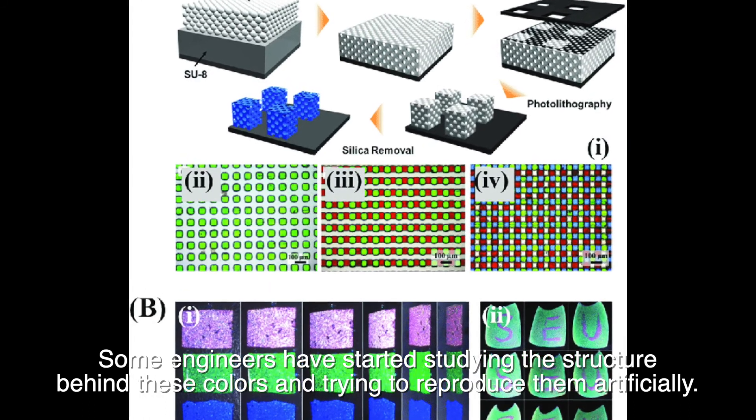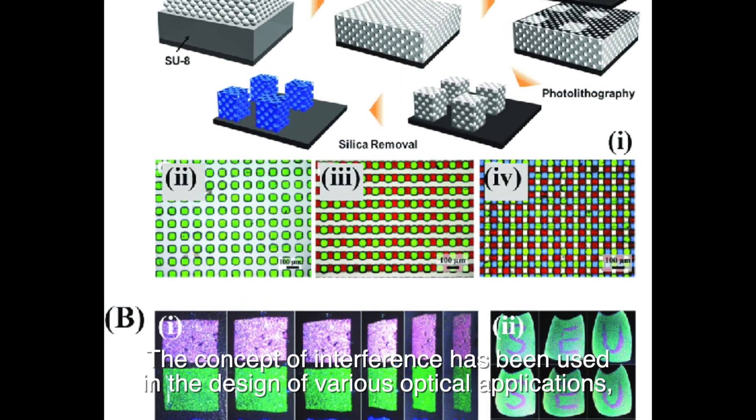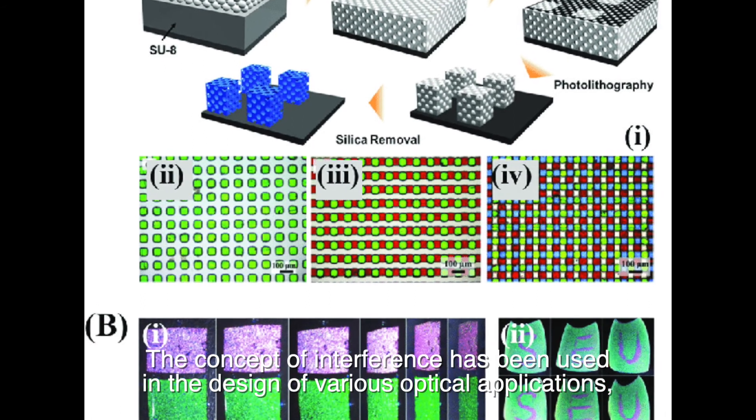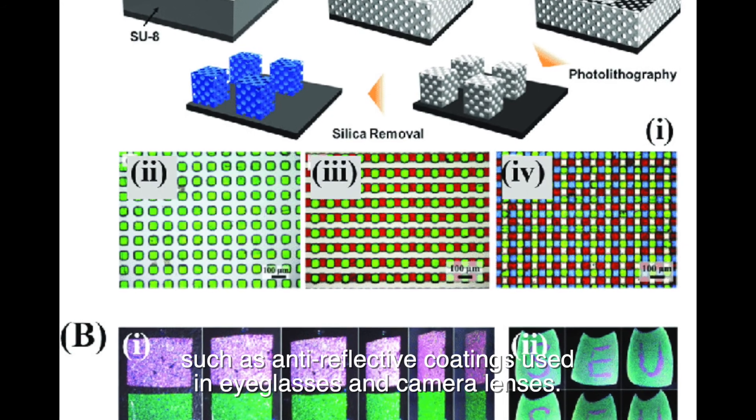colors and trying to reproduce them artificially. The concept of interference has been used in the design of various optical applications, such as anti-reflective coatings used in eyeglasses and camera lenses.